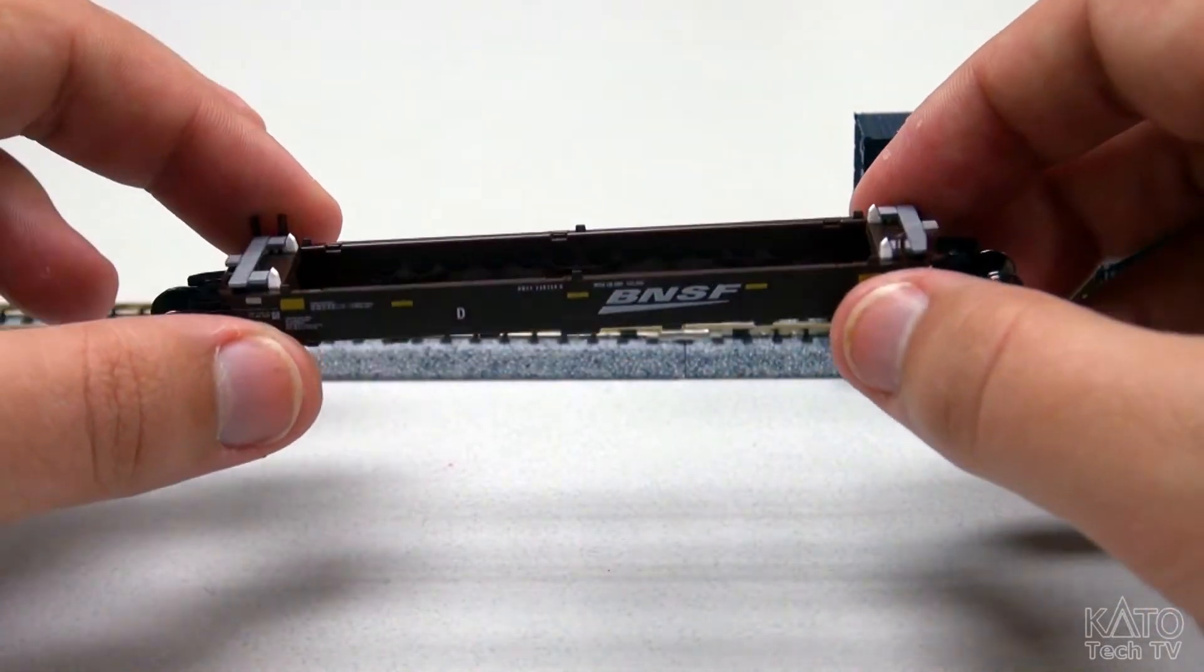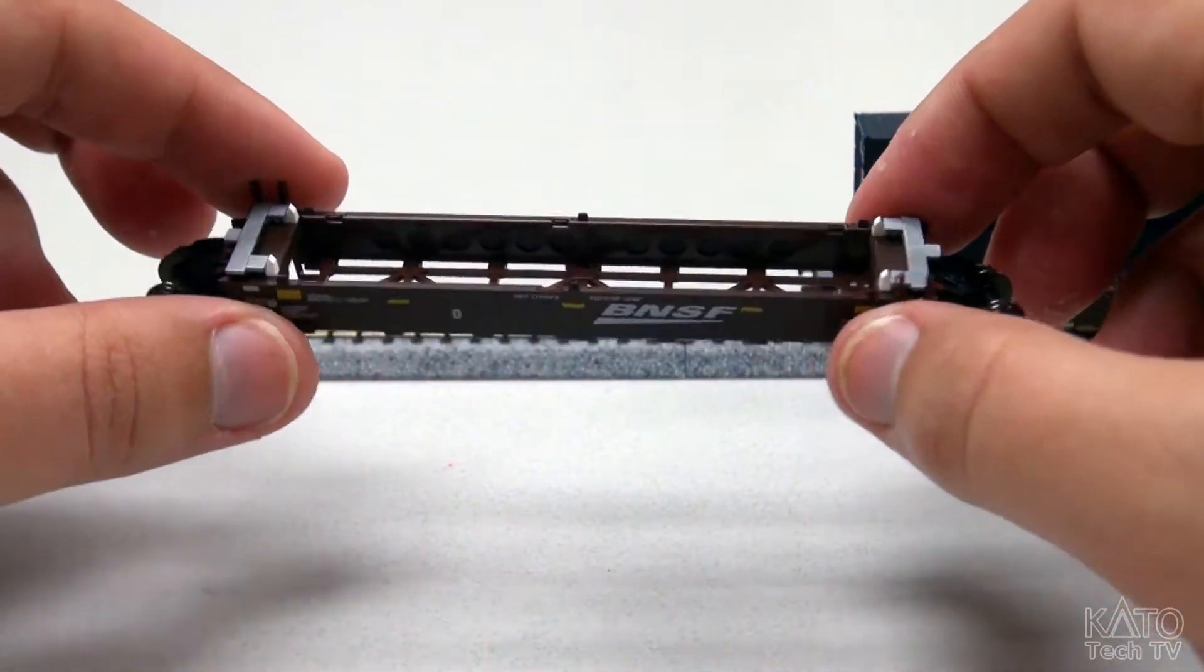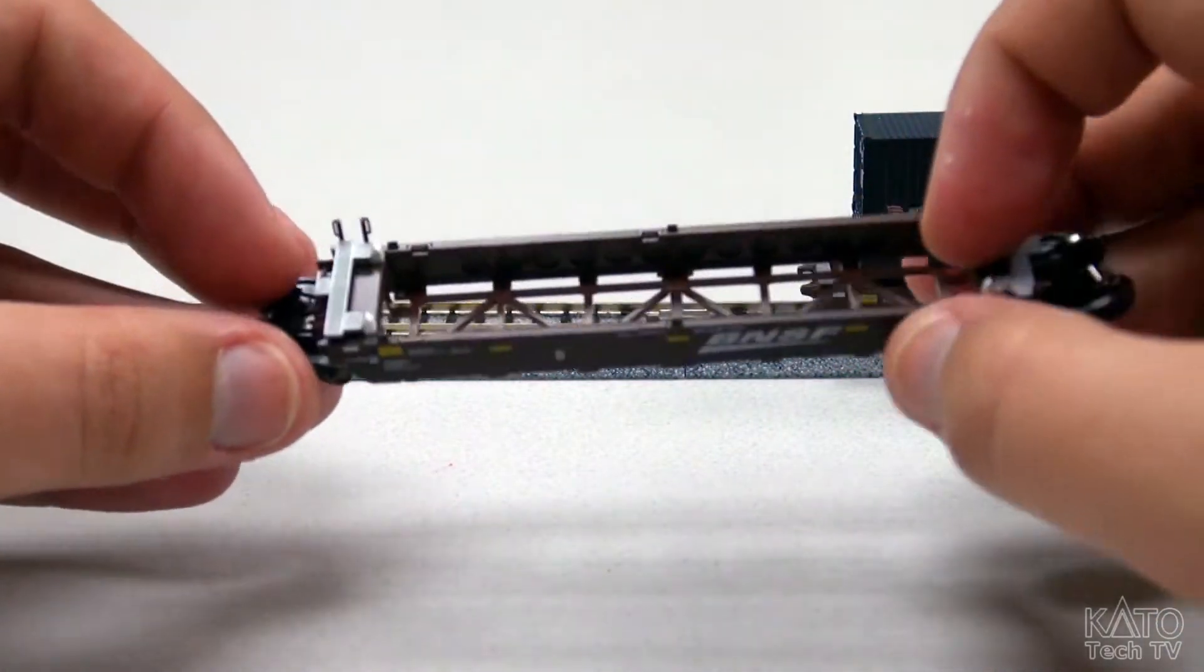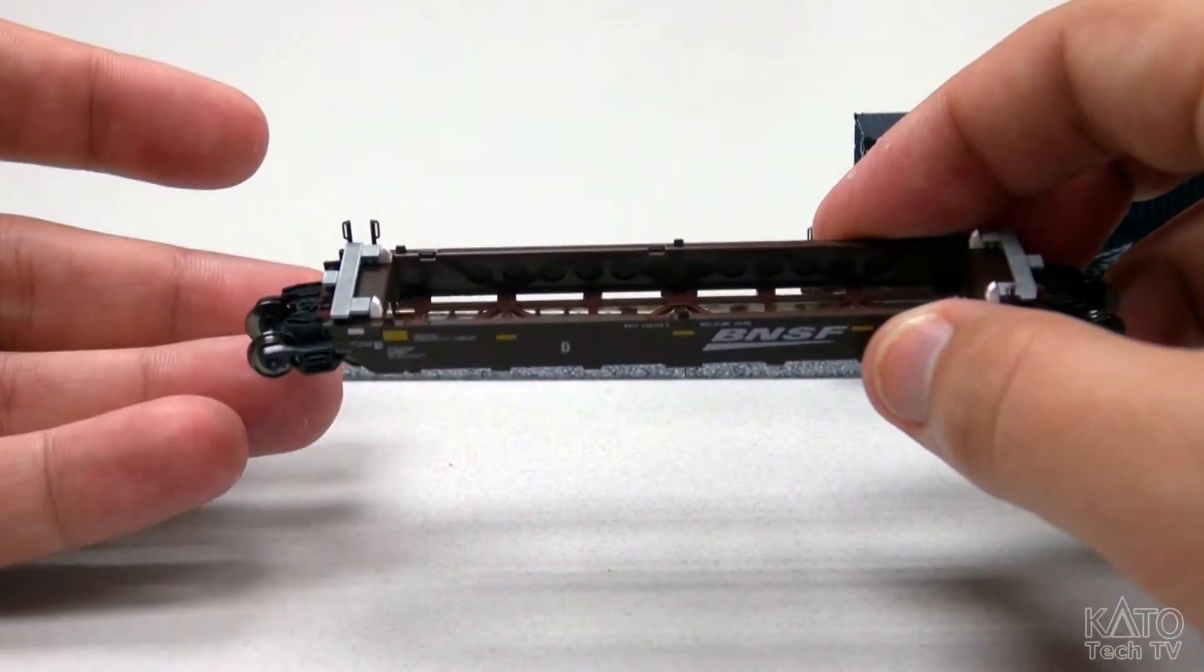These cars come unassembled, obviously, otherwise it would be a very long box. They come unassembled and the trucks are designed so they're actually pretty easy to come on and off so they don't break.